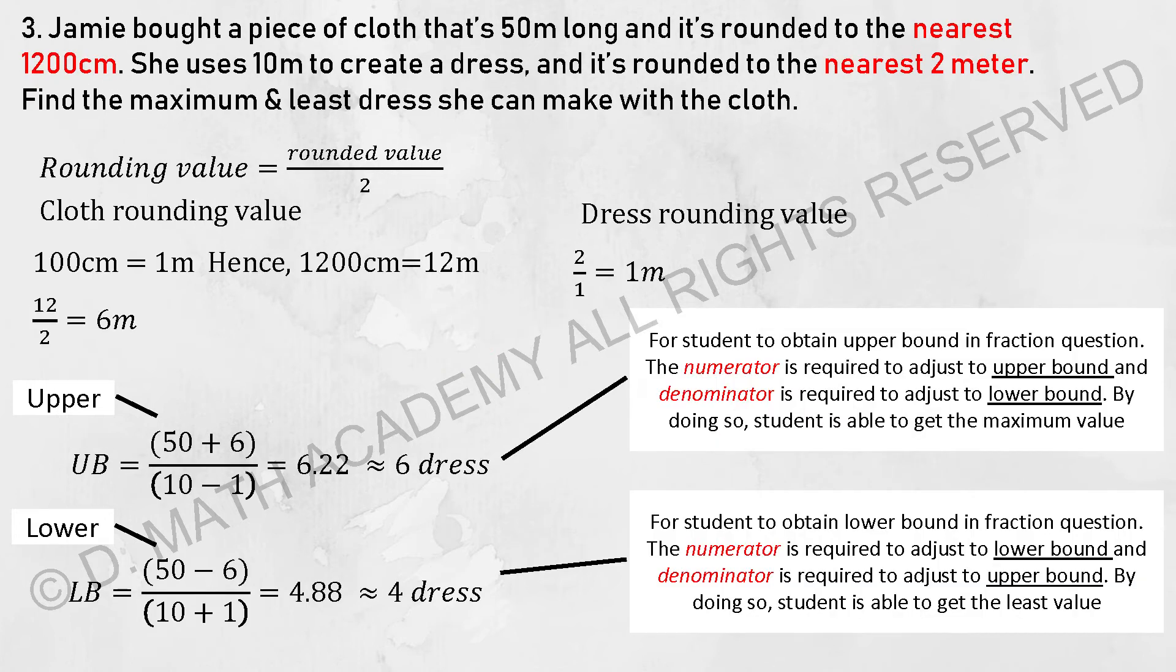Question 3 is actually the hardest type of this particular topic, where it involves 2 variables. By looking at the question, you should know that there is a big piece of cloth and each of it, we need to cut into pieces to make it into dresses. The relationship between these 2 variables, by looking at it, we have 50 meters divided by 10 meters, then we will know that we can actually make 5 dresses.